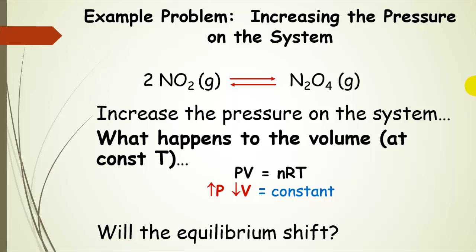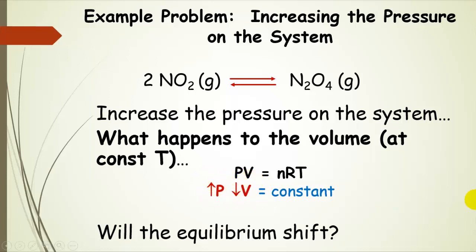We want to think about what happens to the volume of that system. Remember the ideal gas law: PV = nRT. If we hold the temperature constant, the moles of gas and the gas constant are constants, so we have P times V equal to a constant. Now if we increase the pressure — make this number bigger — then the volume has to go down.